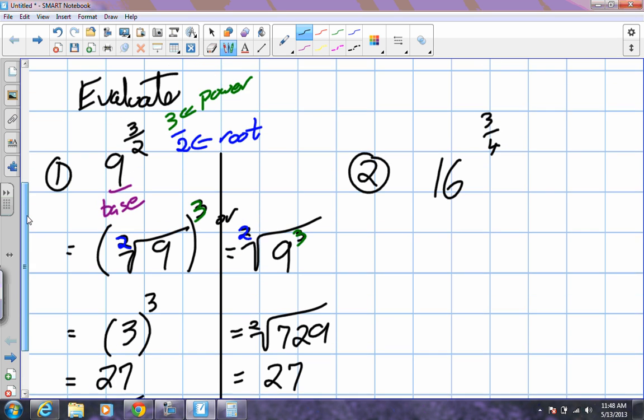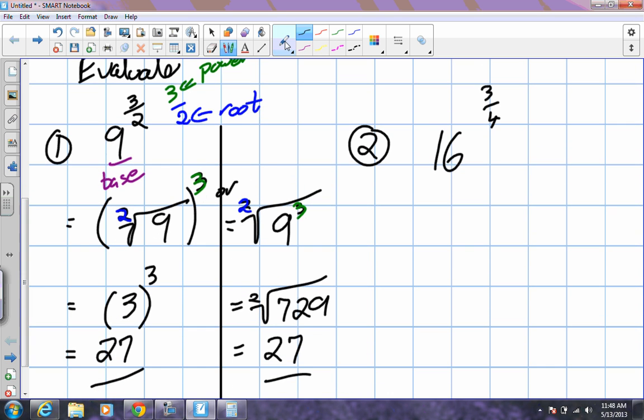What we best is, when we take a look at the 2 of these, it would have been a lot easier to use this version because we found the square root, something we could probably do in our head, and we could kind of do the power of 3 in our head, where this one was much more difficult. So we're going to choose which one we think is best. So we'll evaluate the second one here. We have base 16 to the 4th root to the power of 3, or we have the 4th root of 16 to the power of 3.